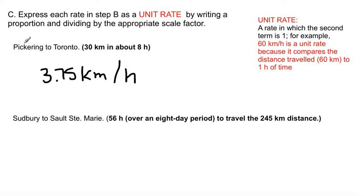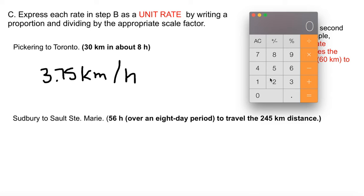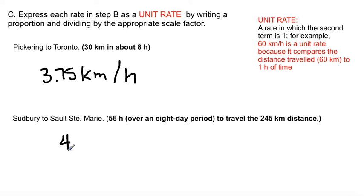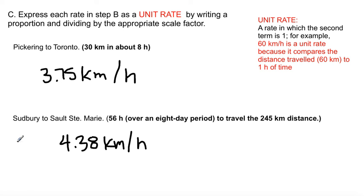So Terry's actual speed from Pickering to Toronto was 3.75 kilometres per hour. For Sudbury to Sault Ste. Marie: 245 divided by 56 gives 4.375, or approximately 4.38 kilometres per hour. So here are your unit rates — 3.75 km/h from Pickering to Toronto, and 4.38 km/h from Sudbury to Sault Ste. Marie. He ran a little bit faster on the Sudbury to Sault Ste. Marie leg.